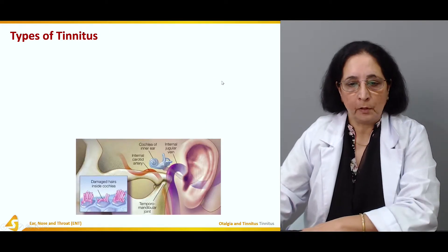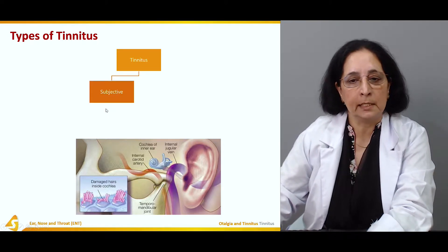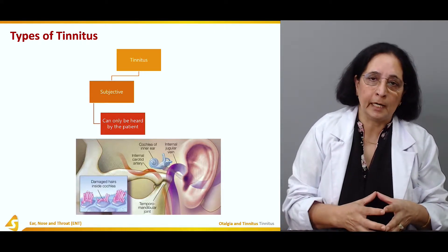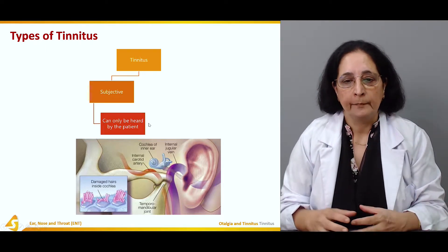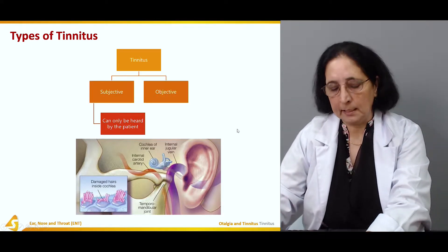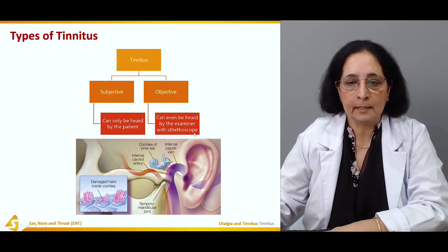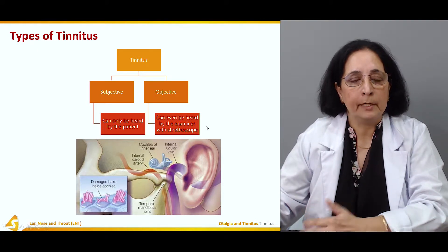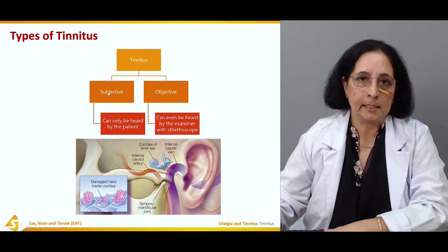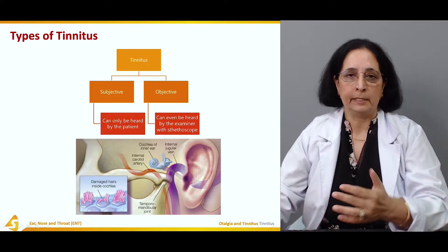There are two types of tinnitus. Subjective tinnitus is the type in which only the patient can hear the sounds. Objective tinnitus is the type in which the examiner can also hear the sounds when examining with a stethoscope. Subjective tinnitus is the more common type; objective tinnitus is not as common.